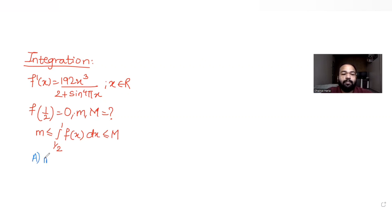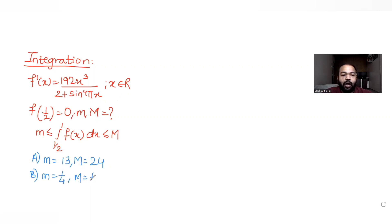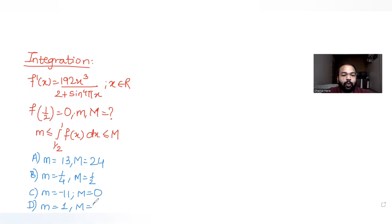The four options given are: A) m = 13, M = 24; B) m = 1/4, M = 1/2; C) m = −11, M = 0; D) m = 1, M = 0. We need to figure out which one is correct.